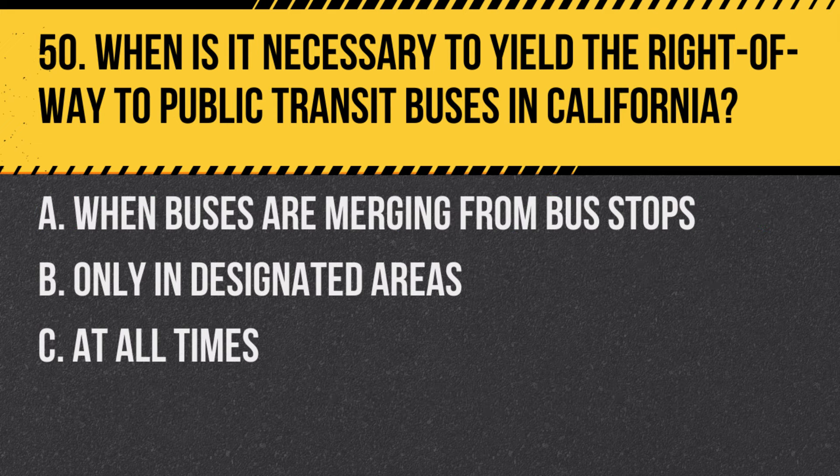Question 50: When is it necessary to yield the right-of-way to public transit buses in California? A. When buses are merging from bus stops. B. Only in designated areas. C. At all times. Answer: A. When buses are merging from bus stops. In California, drivers are required to yield the right-of-way to public transit buses that are merging back into traffic from a bus stop.